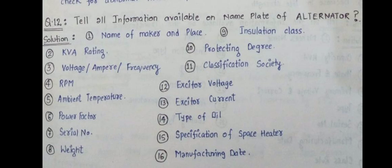For the alternator, we can say maker's name, manufacturer date, serial number, type, classification society, capacity in kVA, voltage, ampere, frequency, RPM, ambient temperature, power factor, exciter voltage, exciter current, type of oil, and specification of space heater. These are the information that you can get on the nameplate of an alternator or generator.